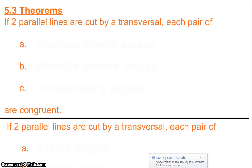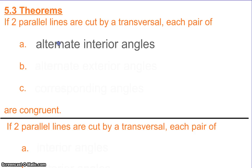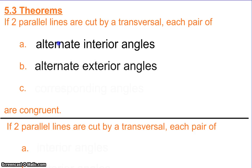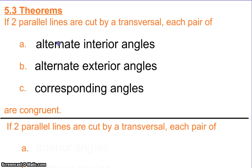Yesterday we talked about each pair of angles — if they are congruent or supplementary, then they are formed by parallel lines. This time we're going the other way: if we have parallel lines, then each pair of alternate interior angles, alternate exterior angles, and corresponding angles are congruent.